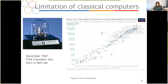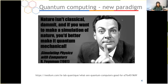Quantum computing is one of the candidates for a new computing paradigm. The idea came from Richard Feynman in 1981. Here is the very famous quote — he said: "Nature isn't classical, damn it. And if you want to make a simulation of nature, you'd better make it quantum mechanical." So he proposed to simulate a quantum system using a quantum computer.